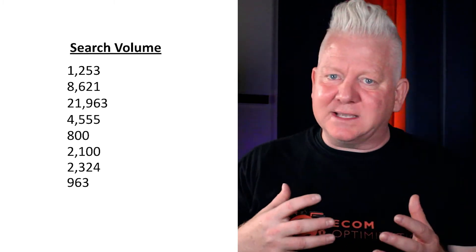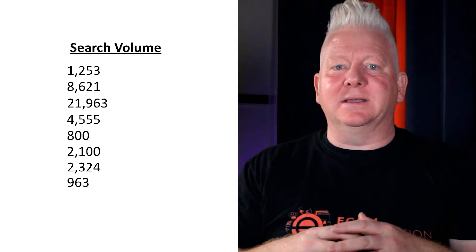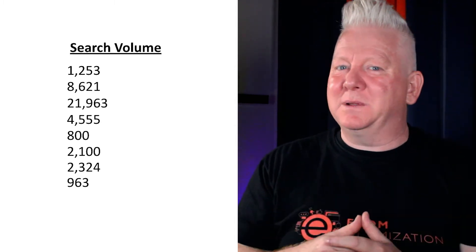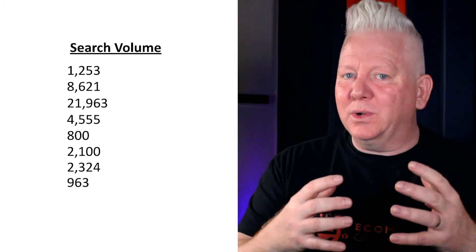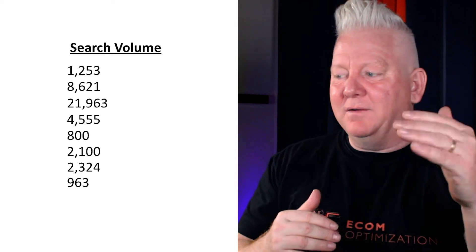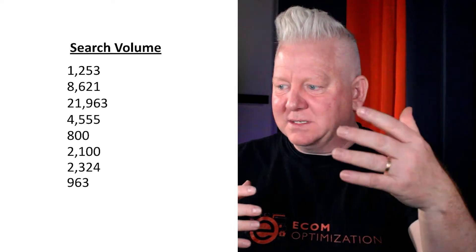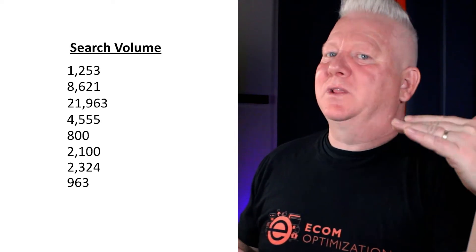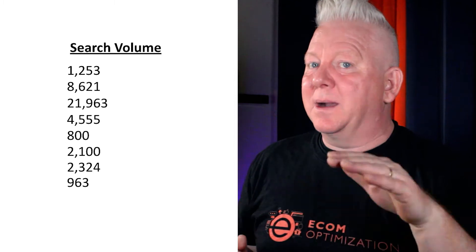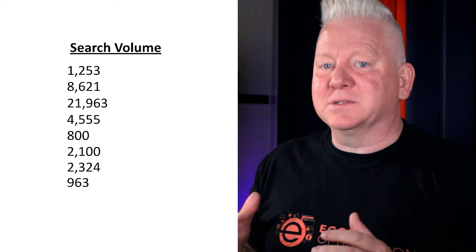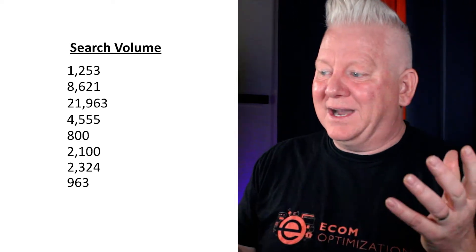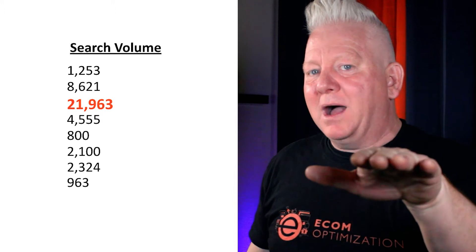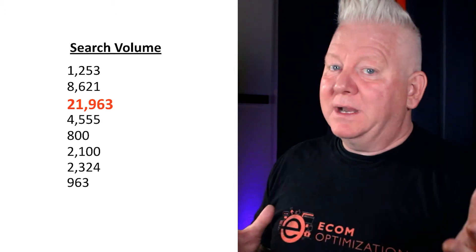When we begin looking at SEO for this, we start to look at search volume. The most beginner information is: what is the search volume for the phrases I'm looking at? Search volume has some importance, but it's actually the least important of all the numbers you're going to look at when optimizing your listing. Some keywords have 21,000 in search volume, some have only 963 or 800. The beginner mind immediately thinks that 21,000 searches per month is better than all the others — but that may or may not actually be true.